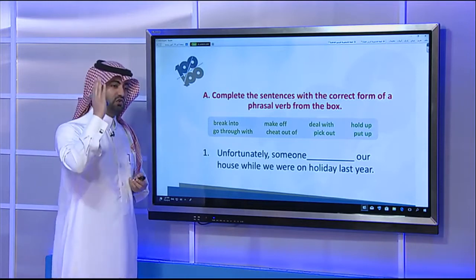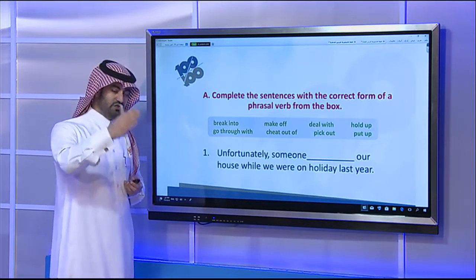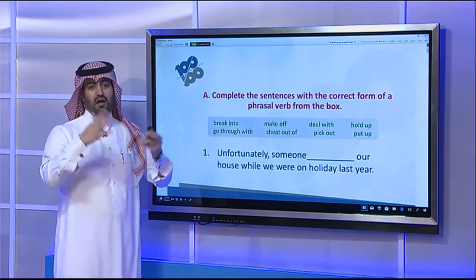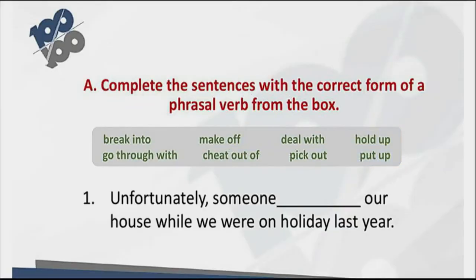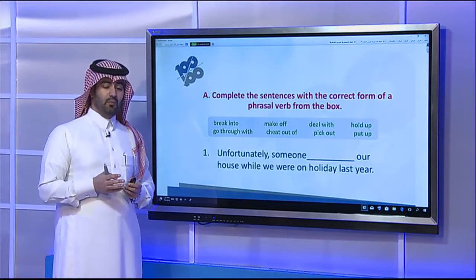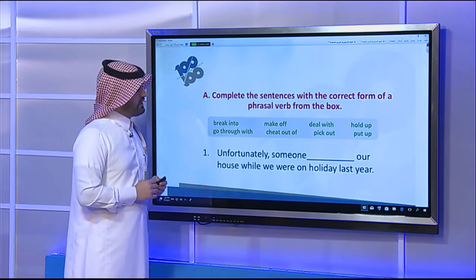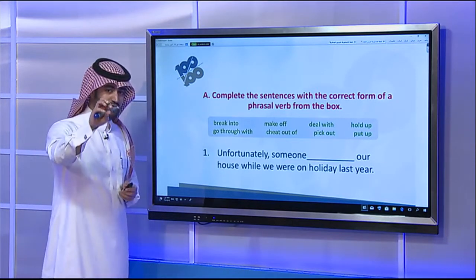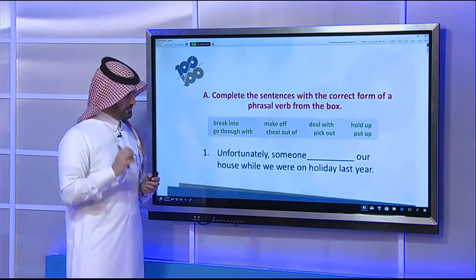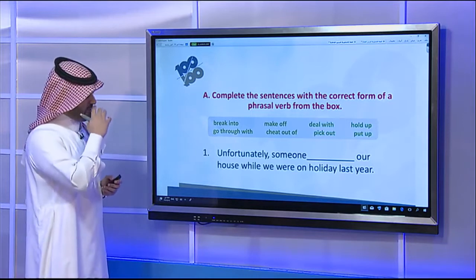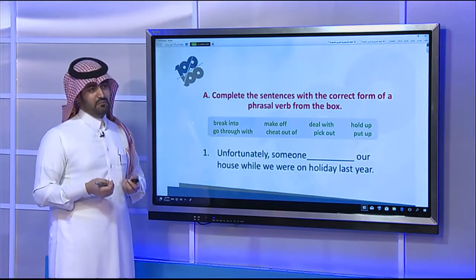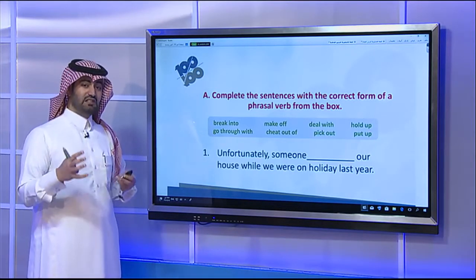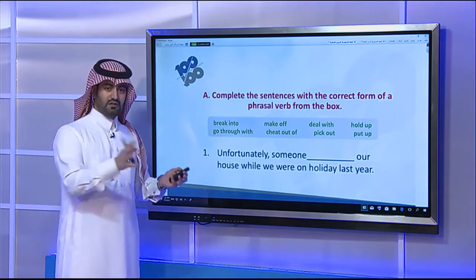Fifth, 'go through with' — you go through with your plans, meaning you do what you planned to do despite the difficulties. Sixth, 'cheat out of' — to prevent someone from getting something they are entitled to. Seventh, 'pick out' means to select or choose. The last one, 'put up' — to let somebody stay in your house.